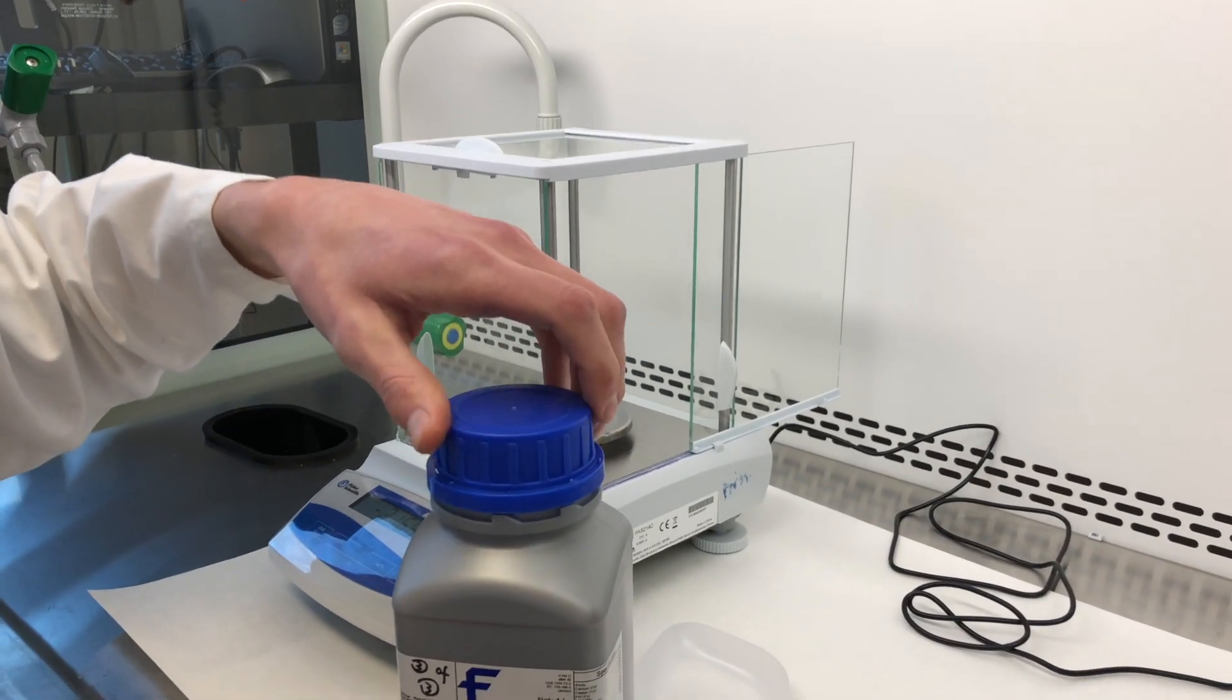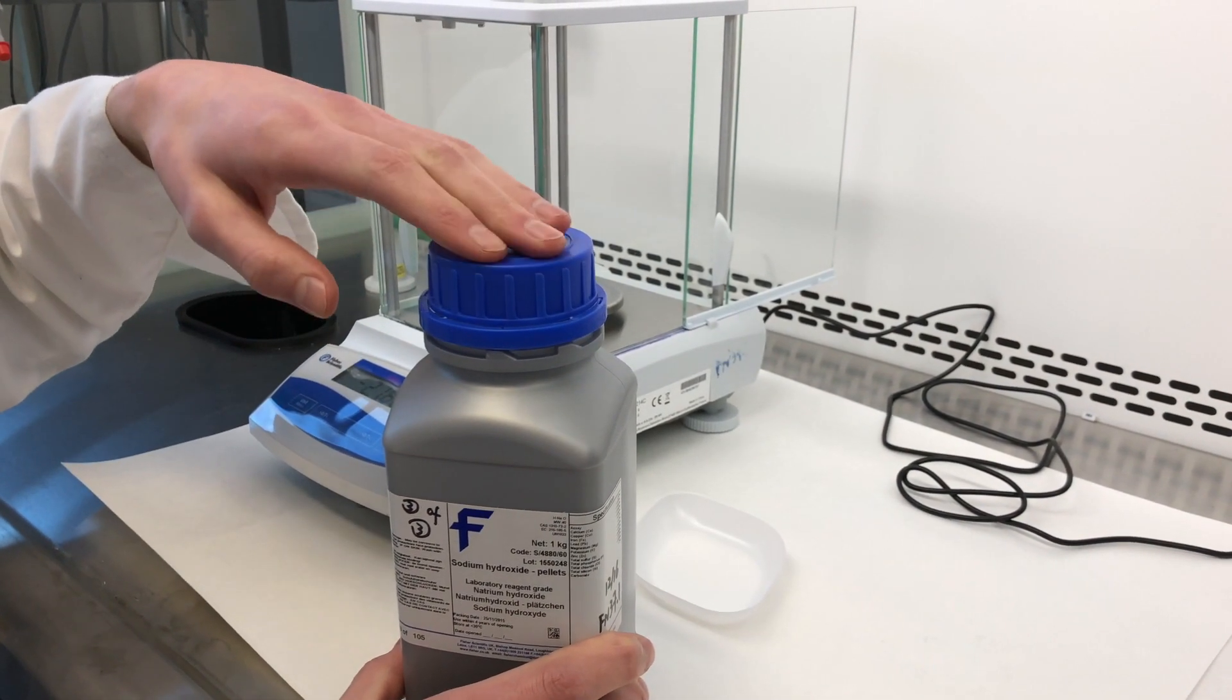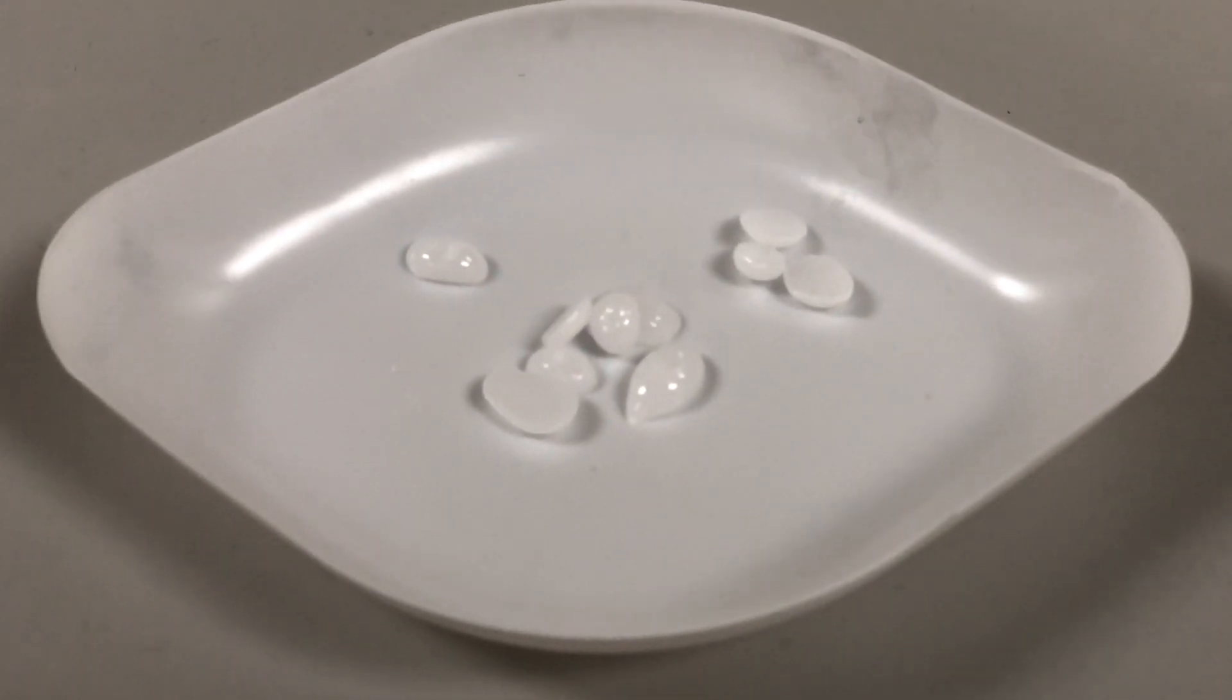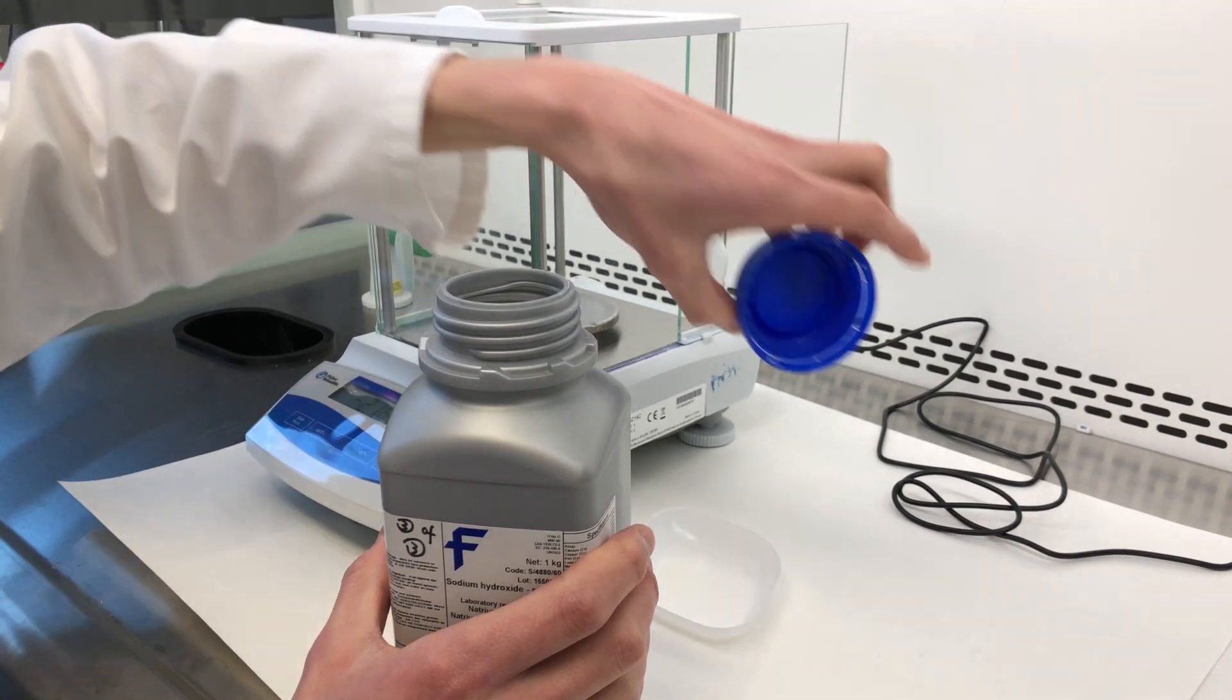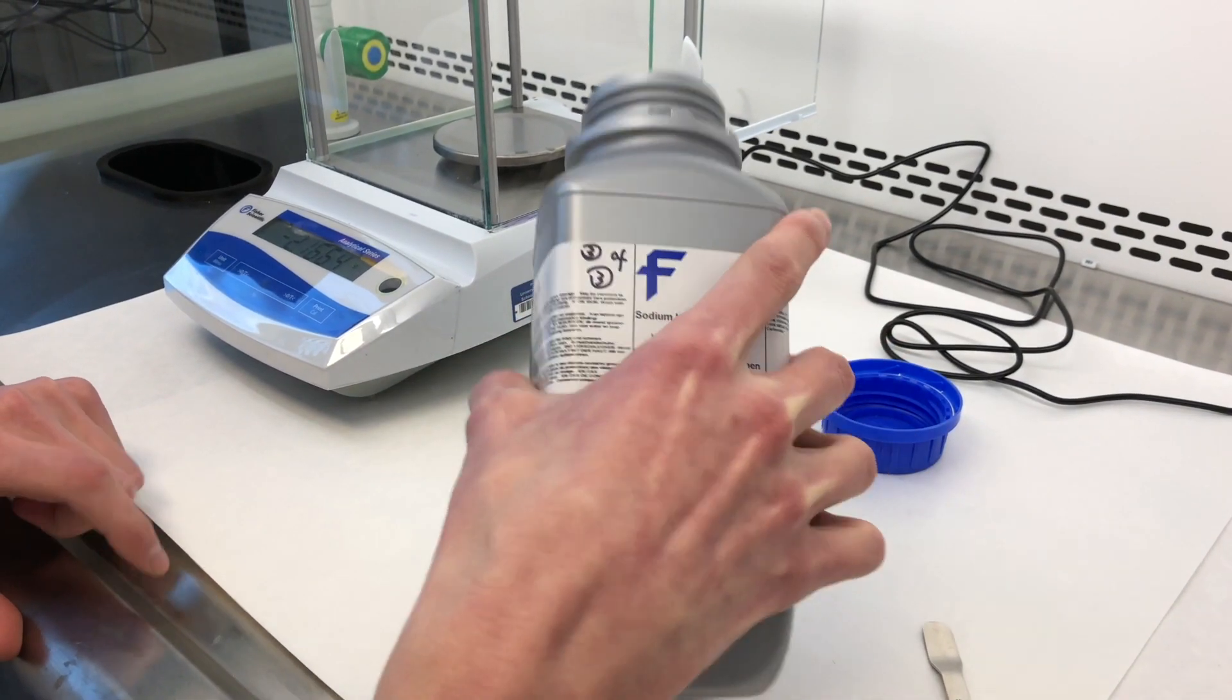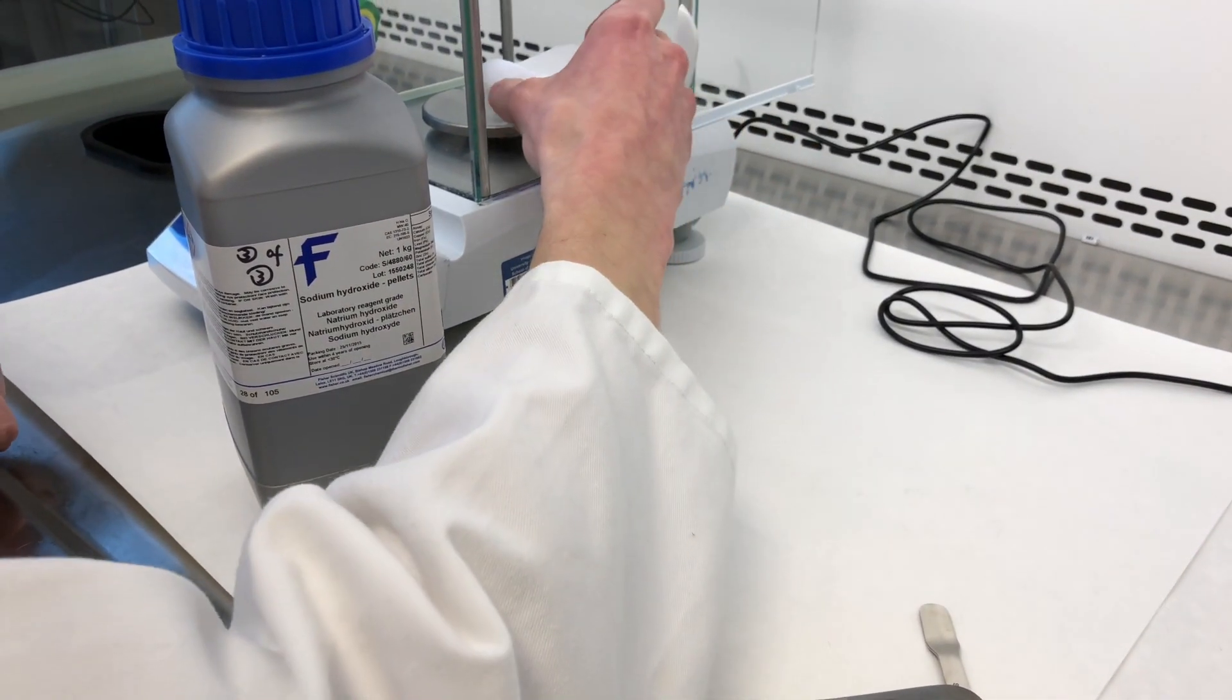One of the properties of sodium hydroxide is that it's hygroscopic and deliquescent. So as soon as you open up the container, it will start absorbing moisture from the air. Taking a look at the sodium hydroxide pellets here, you can see that they're slightly shiny. That is because they are absorbing moisture from the air. So this procedure needs to be done quite quickly.